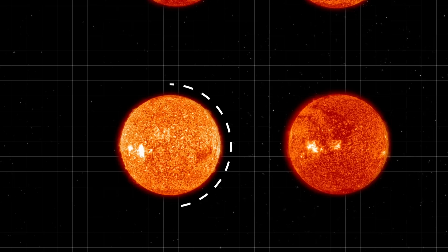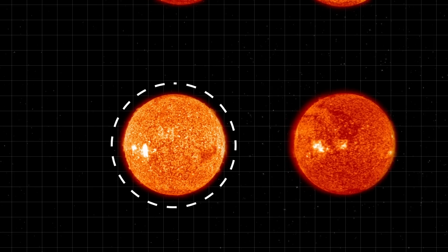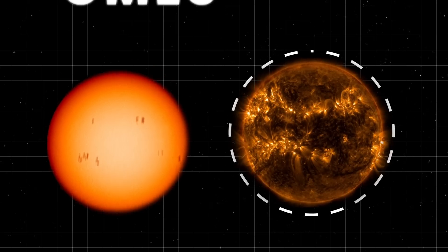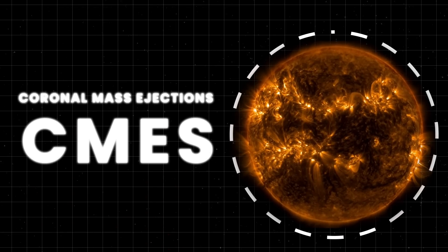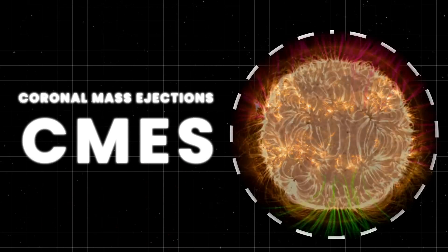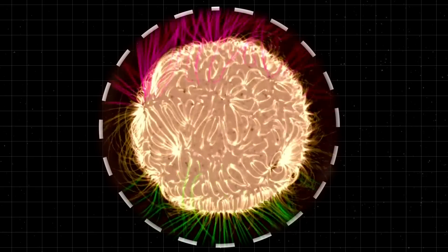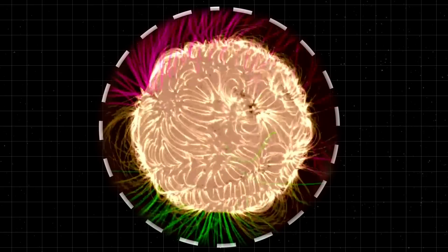Around the midpoint of the solar cycle, the Sun reaches solar maximum, a period of peak activity with the highest number of sunspots, solar flares and coronal mass ejections, or CMEs. The magnetic field becomes highly complex and tangled due to the continuous twisting and shearing by differential rotation and convection.